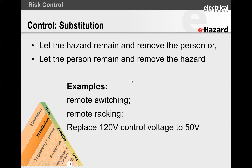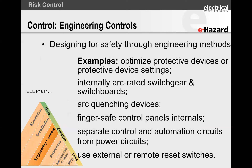The next one is substitution. Substitution means I'm going to substitute the person with something, or substitute the hazard with something. Instead of standing in front of equipment and pushing a start-stop button, depending on the arc flash energy, maybe I implement remote switching — a long lanyard that takes me away from the equipment. I could have remote racking, automated controls, or use a long lanyard. The best substitution: why are we still using 120-volt control systems? If you get your control voltage down to less than 50 volts, you win — because less than 50 volts means no shock hazard and no arc flash hazard.